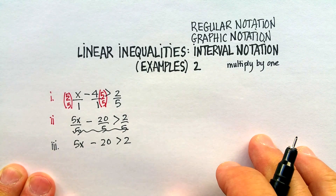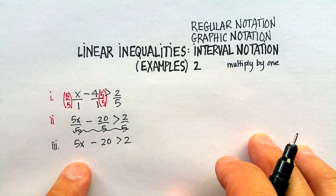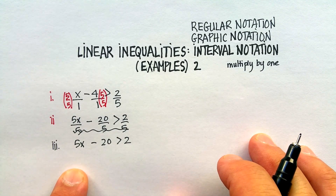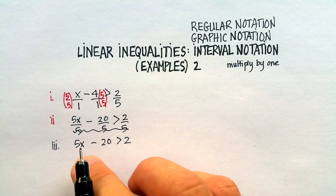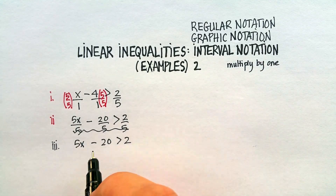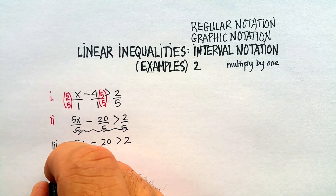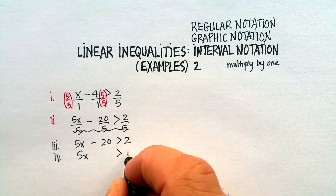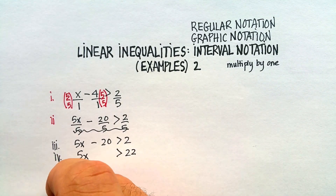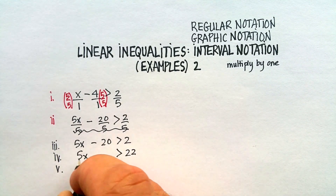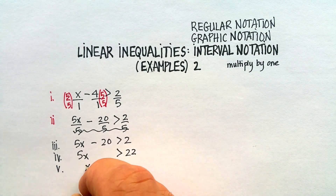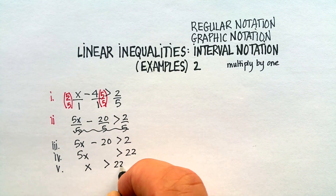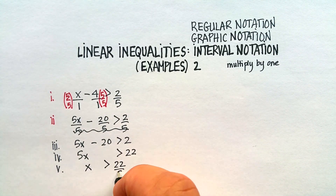Now all my denominators are exactly the same, so I get to cross them out. Now I've got a much simpler problem: 5x minus 20 is greater than 2. That's a lot easier to deal with when working with whole numbers. I'm going to add 20 to both sides to get 5x is greater than 22, then divide both sides by 5: x is greater than 22 over 5.